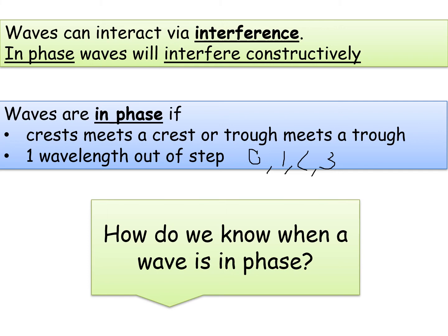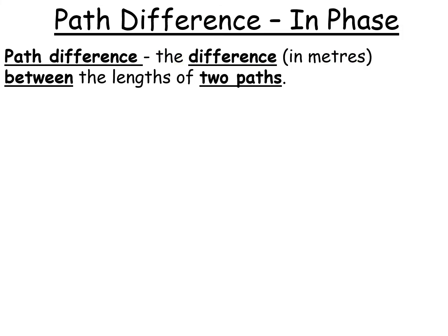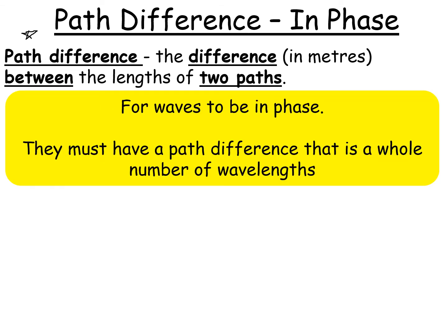As long as they are a whole wavelength out, you will still get waves that are in phase. Here's a new definition to write down: path difference is literally the difference in meters between the lengths of two paths. For waves to be in phase, they must have a path difference that is a whole number of wavelengths.